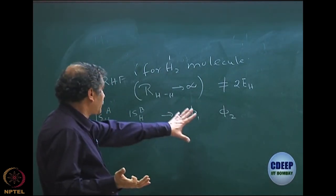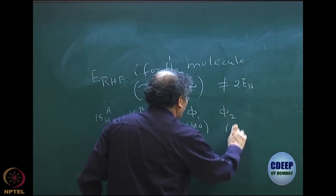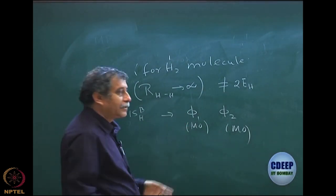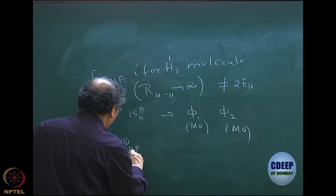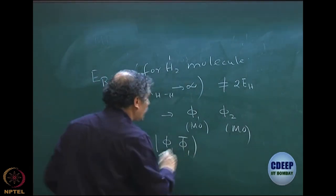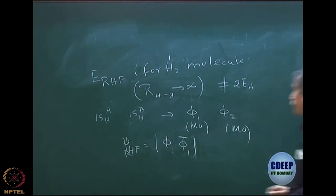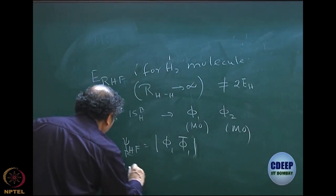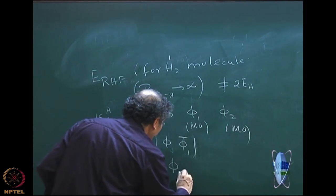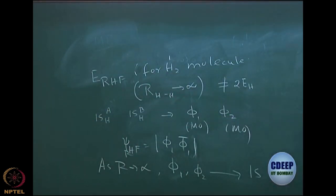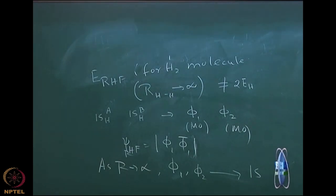Remember, molecular orbitals are formed from linear combinations of atomic orbitals — our two bases are 1s_A and 1s_B. Then phi_1 and phi_2 are the two spatial molecular orbitals formed. One is bonding, one is anti-bonding; the bonding orbital is phi_1. So Hartree-Fock becomes |phi_1, phi_1-bar⟩. As R goes to infinity, phi_1 and phi_2 go to the 1s orbitals — they started from 1s orbitals and had bonding and anti-bonding character. If you do the reverse MO diagram, phi_1 goes to one of the 1s and phi_2 goes to the other.